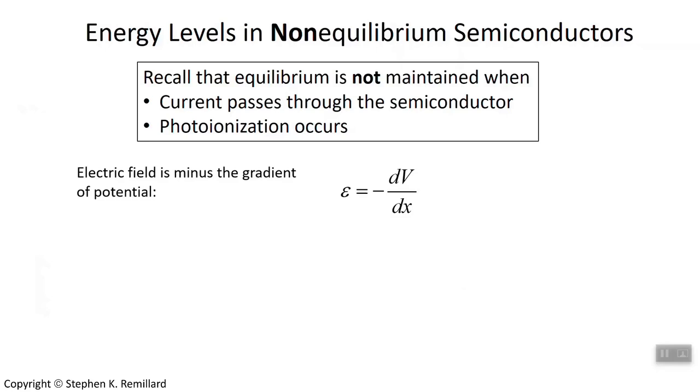In practical uses of semiconductors, we have to consider the non-equilibrium situation, because in general, the semiconductors will not be in equilibrium. That's the case whenever a current is passing through the semiconductor. It's also the case when you have photoionization going on, that is, light is striking the semiconductor and exciting electrons into the conduction band.